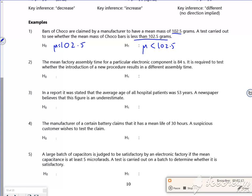It says the mean factory assembly time for a particular component is 84 seconds. So we're saying that μ is 84. I just want to see if it's different, so it's just a little bit vague. It tends to be a two-tailed test, so that would be the μ isn't equal to 84.